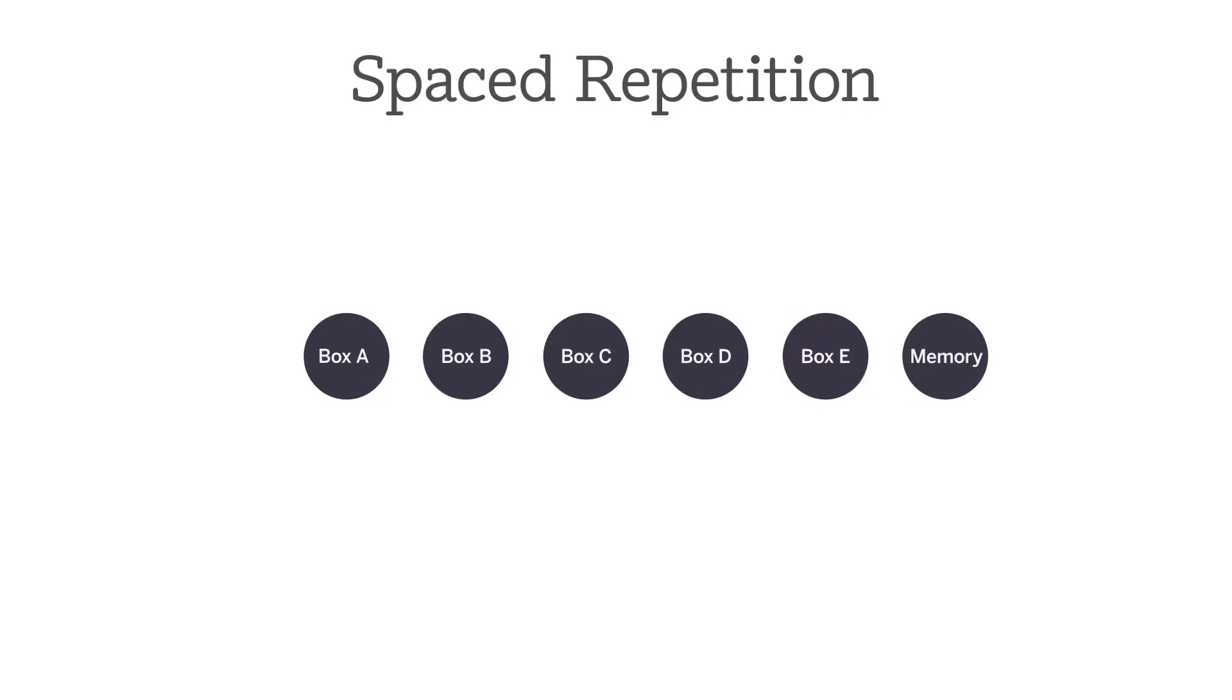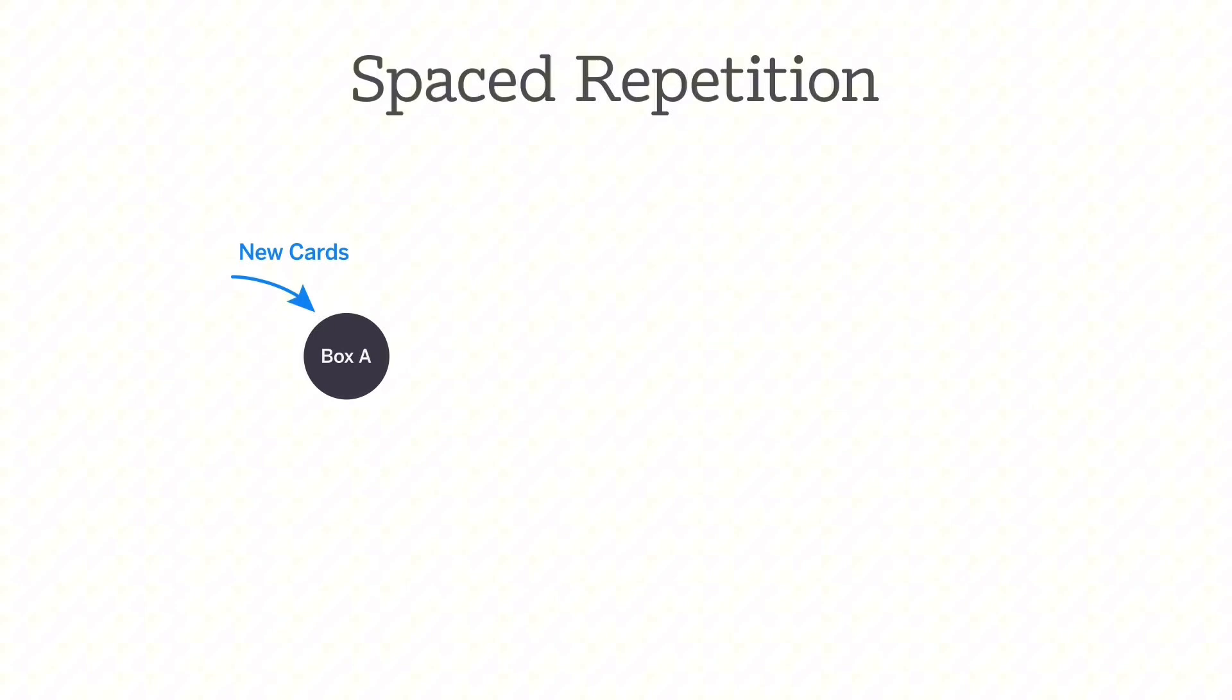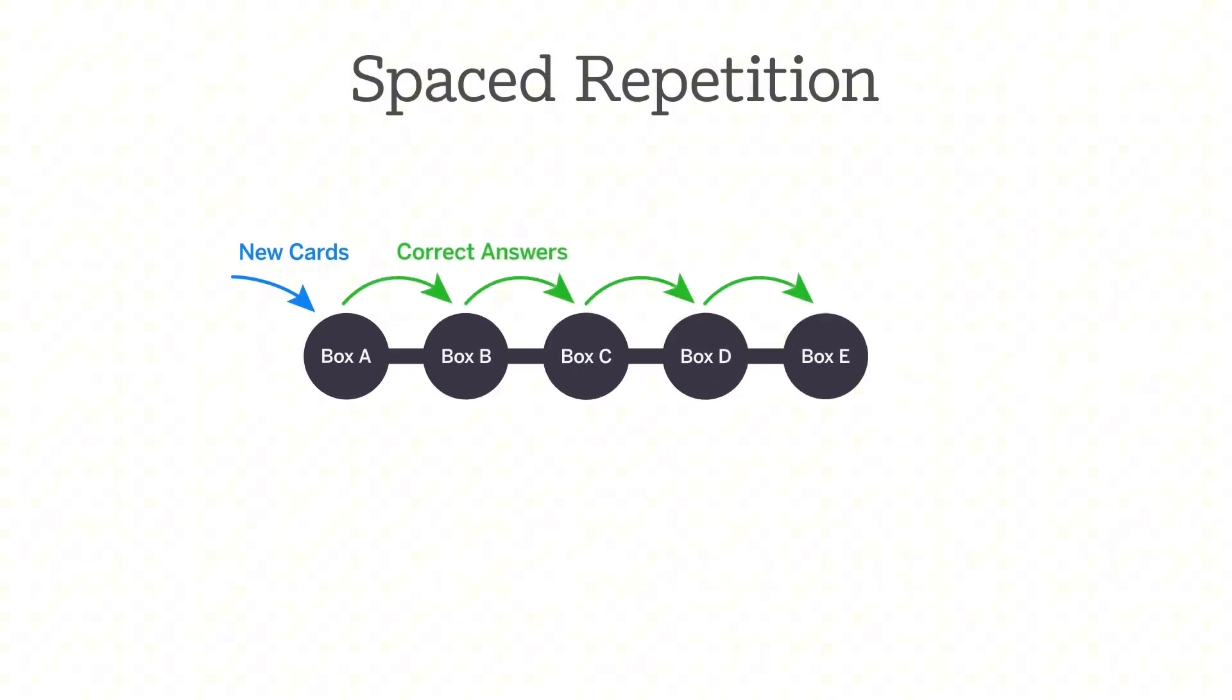We use an approach called spaced repetition, which assigns cards into six different boxes. New cards always start out in box A. If a student answers a card correctly, the card moves up to the next box. If a student answers it incorrectly on the first or second attempt, it moves back into box A.